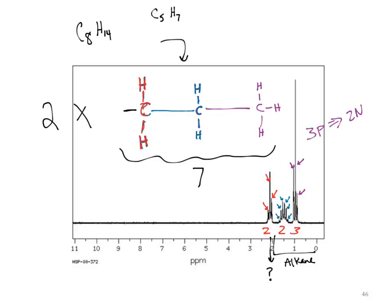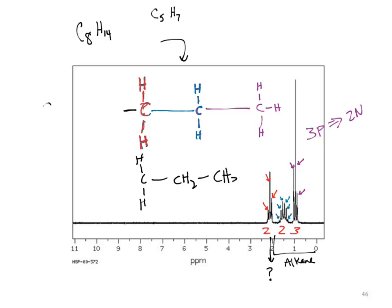So I have two of those pieces. Let's draw that second piece down here. Now in my missing pieces I'm only missing two carbons.